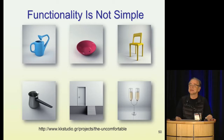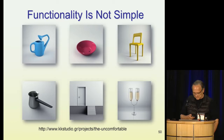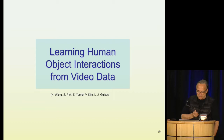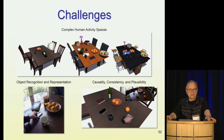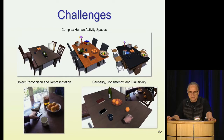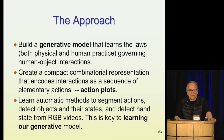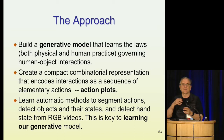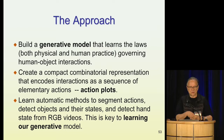Let me finish by talking about human-object interactions and how to learn those from video data. This is a challenging problem because the places where we work and live tend to be complex. We have to understand objects and actions, and deal with consistency, plausibility, and causality. The approach we have taken is to build a generative model that tries to learn the laws governing interactions — both in terms of physics and custom — and create a representation with two parts: a combinatorial part focusing on the appropriate sequence of atomic actions, and a continuous part learning about actual motions and placements. We do that all from RGB videos.